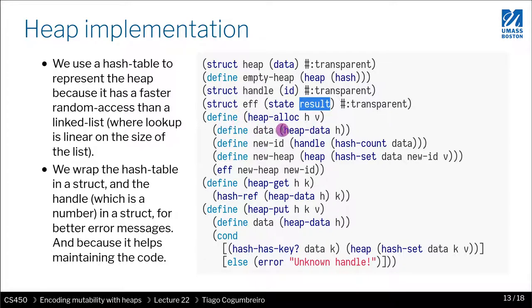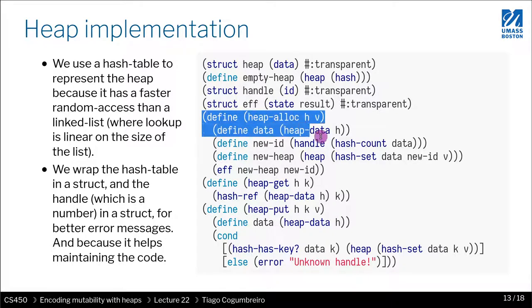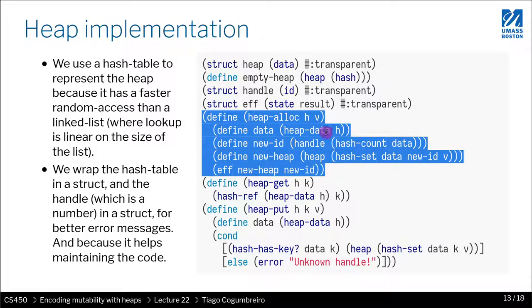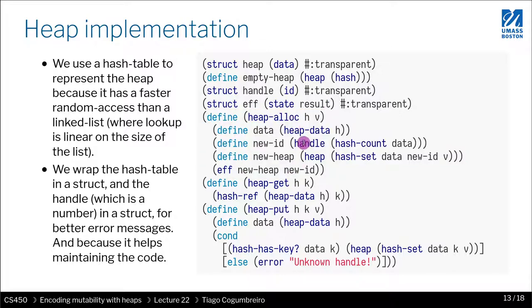So next, we have heap-alloc. So let's try to discuss what is going on here or try to understand it. So heap allocation does two things. It has a heap and a value. What do we do?